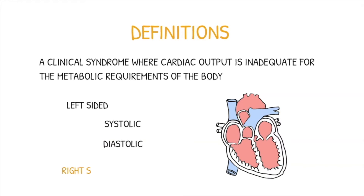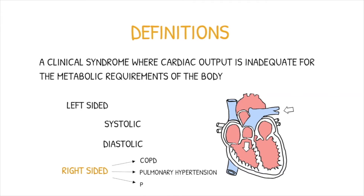Right-sided heart failure usually occurs with left-sided, but it can occur on its own. This happens when there is a pre-existing lung condition that causes a backlog of blood back to the right ventricle, such as chronic obstructive pulmonary disease (COPD), pulmonary hypertension, or pulmonary embolism.